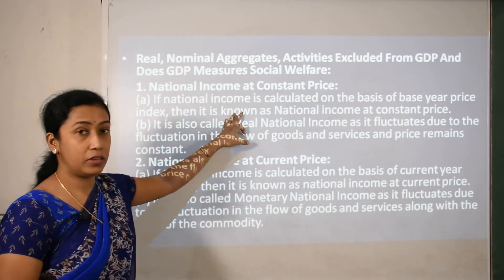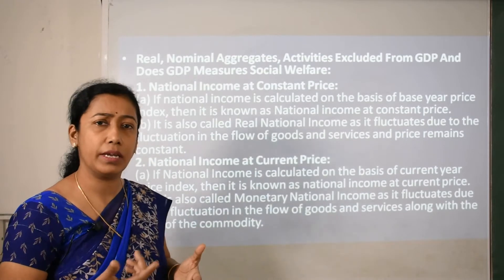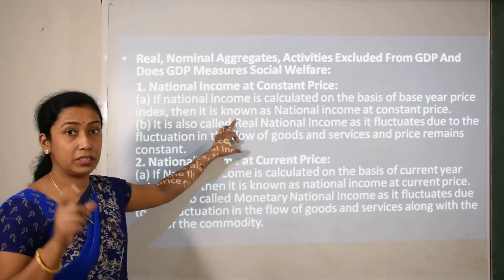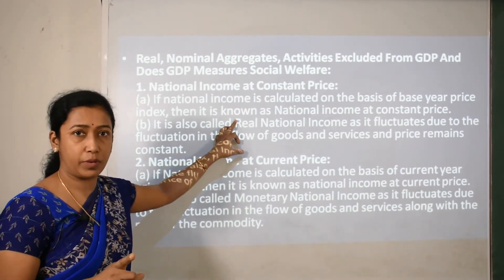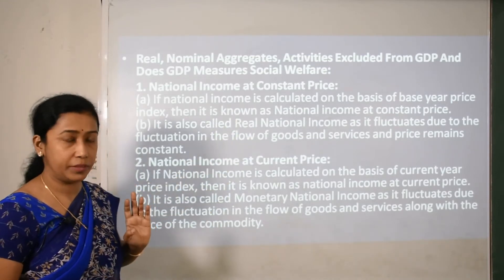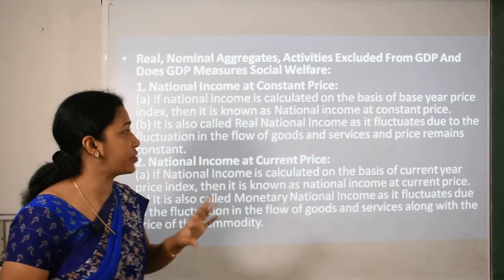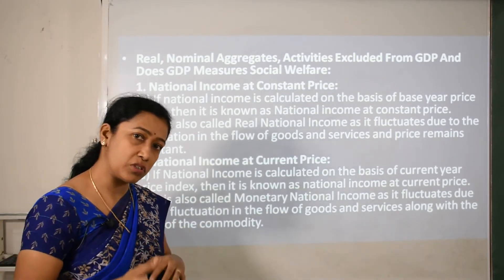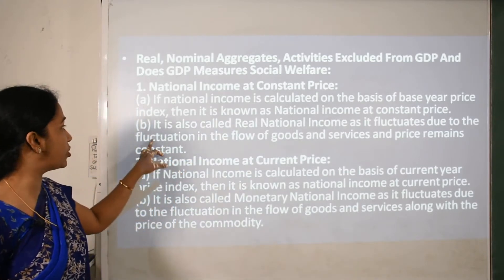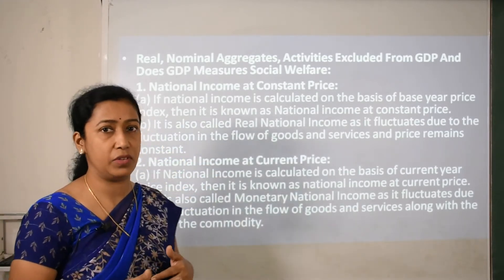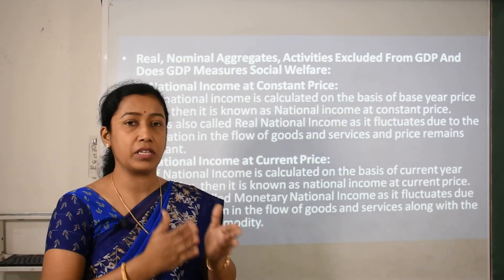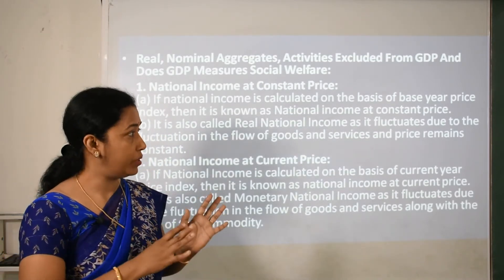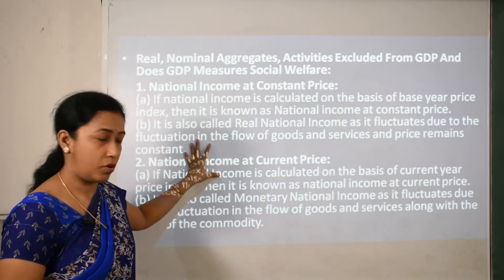If national income is calculated on the basis of the base year price index, it is known as national income at constant price, also called real national income. It fluctuates due to fluctuation in the flow of goods and services produced in a country. Besides all this fluctuation in market prices, we calculate the national income at constant price.